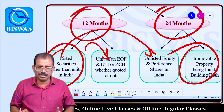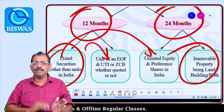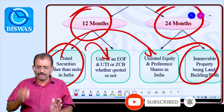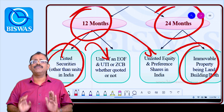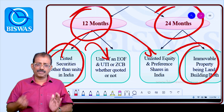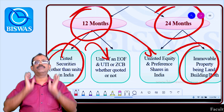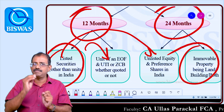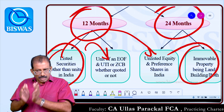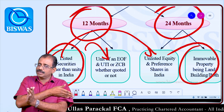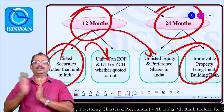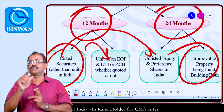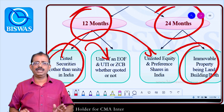Summary: Listed securities other than units — 12 months. Units of equity-oriented funds, UTI units, and zero coupon bonds — quoted or unquoted — 12 months. Unlisted equity shares and preference shares — 24 months. Listed equity and preference shares — 12 months. Immovable property: land, building, or both — 24 months. Crystal clear.